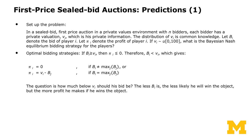Intuitively, the less you bid, the less likely you are to win the object. But if you win, you will earn more profit. So the optimal bidding strategy is essentially a trade-off between the probability of winning and the profit margin. Let's see how we resolve that.